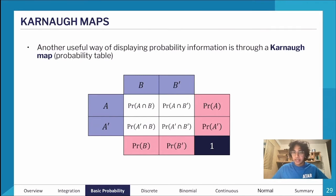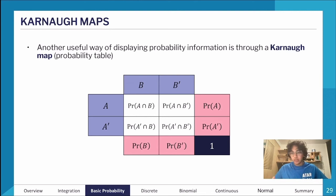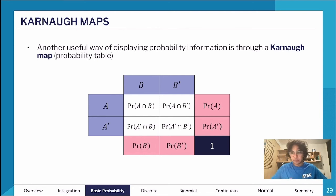Another way to display things apart from a Venn diagram is known as a Kano map. Kano maps aren't explicitly on the study design, but they're a really good way of representing these questions and they definitely helped me during my exam.